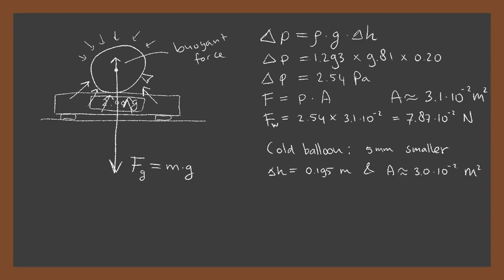The cold balloon is about 5 millimeters smaller, so the change in height and the surface area are a bit smaller too. The buoyant force for the cold balloon then is 8.22 times 10 to the power of minus 2 Newtons. We can calculate the difference in buoyant force and convert that to an equivalent mass. So the cold balloon should be about 0.4 grams lighter than the warm balloon. This is an upper limit because we did not take into account the round shape of the balloon. Some parts of the balloon experience a smaller upward force, so the real difference in mass will be smaller, just as we've measured.